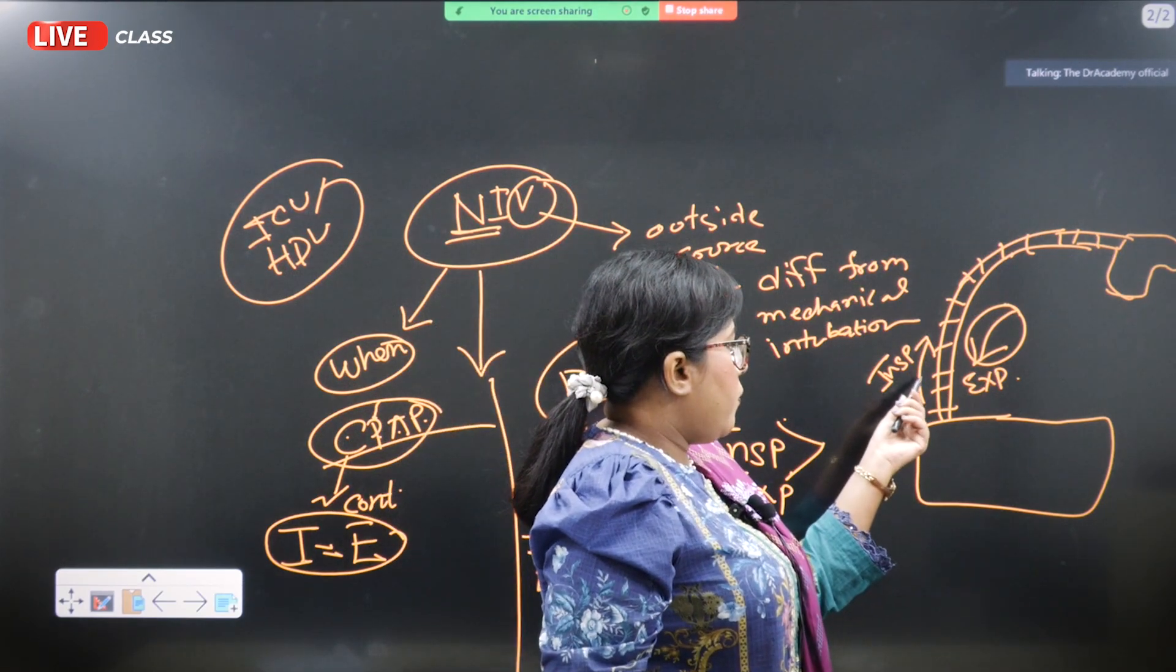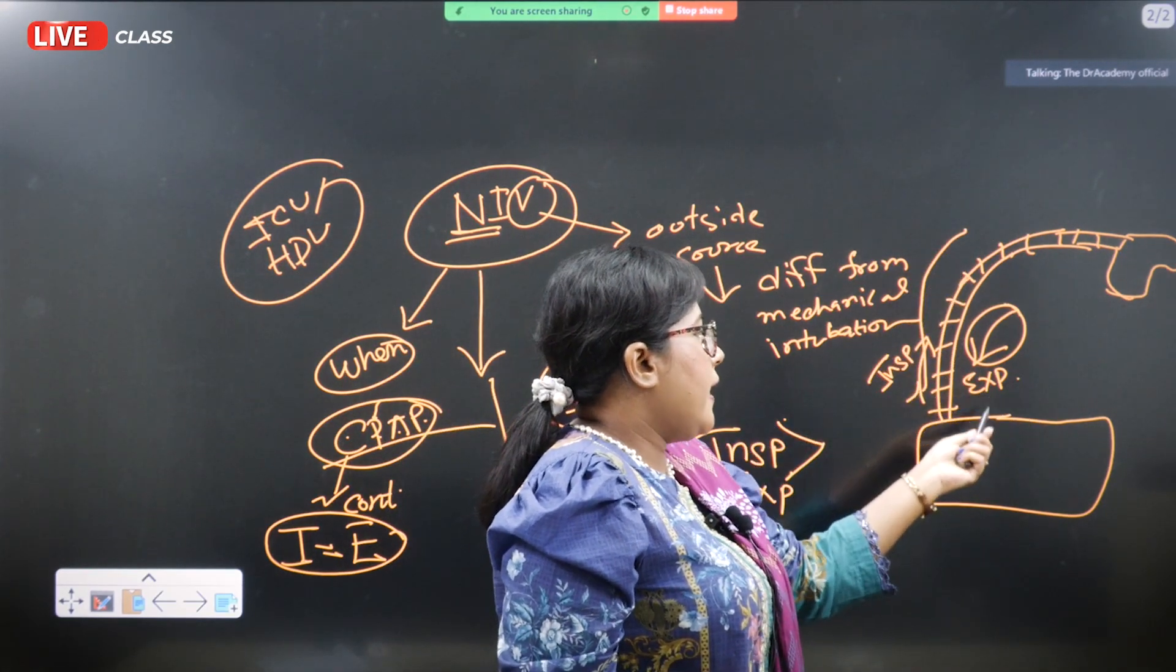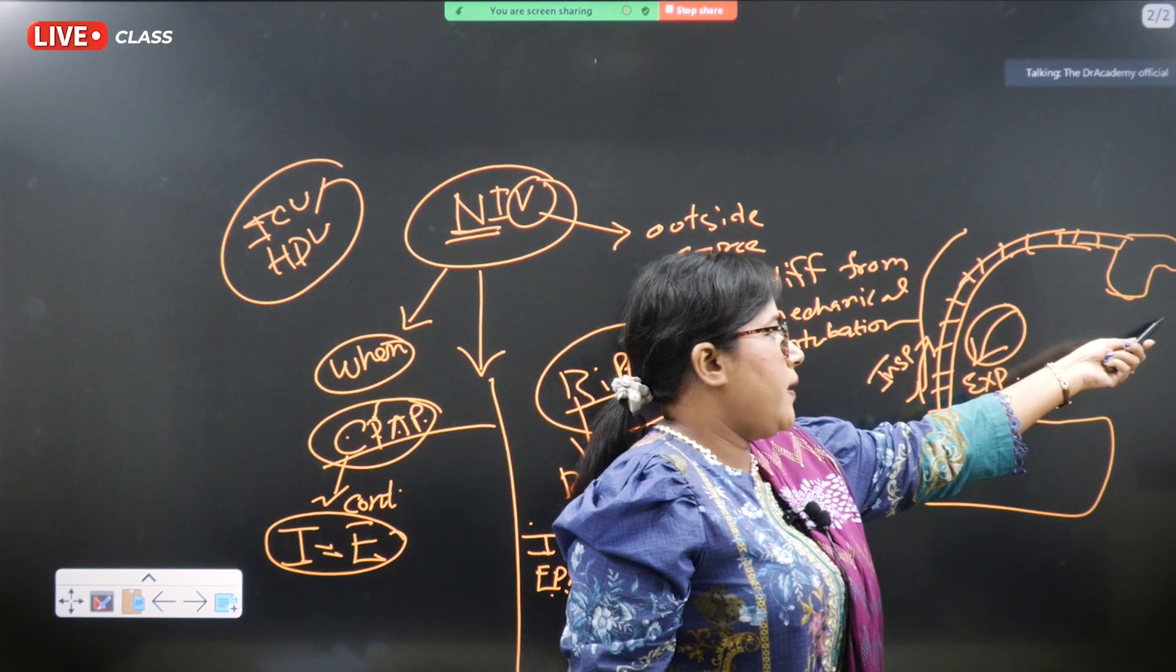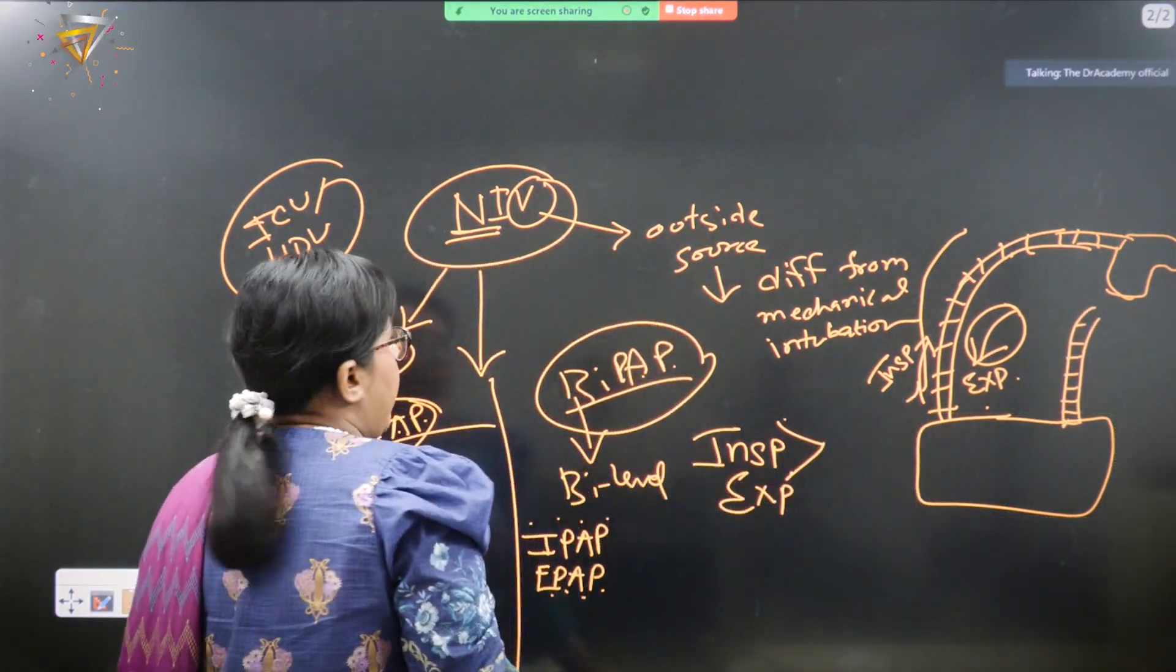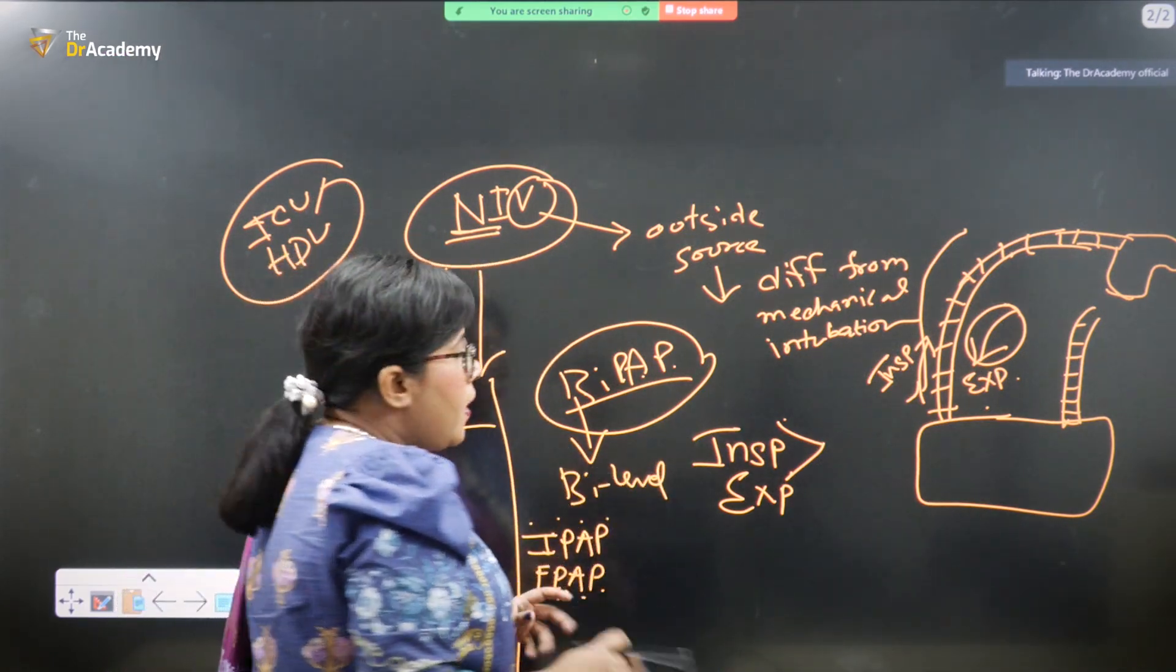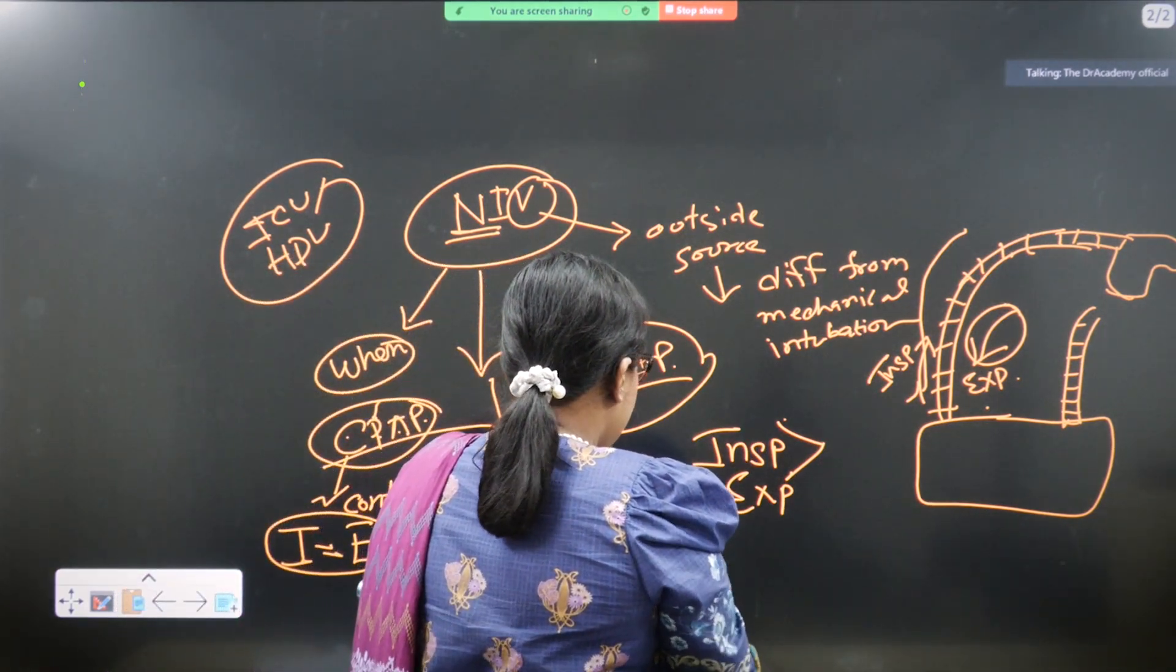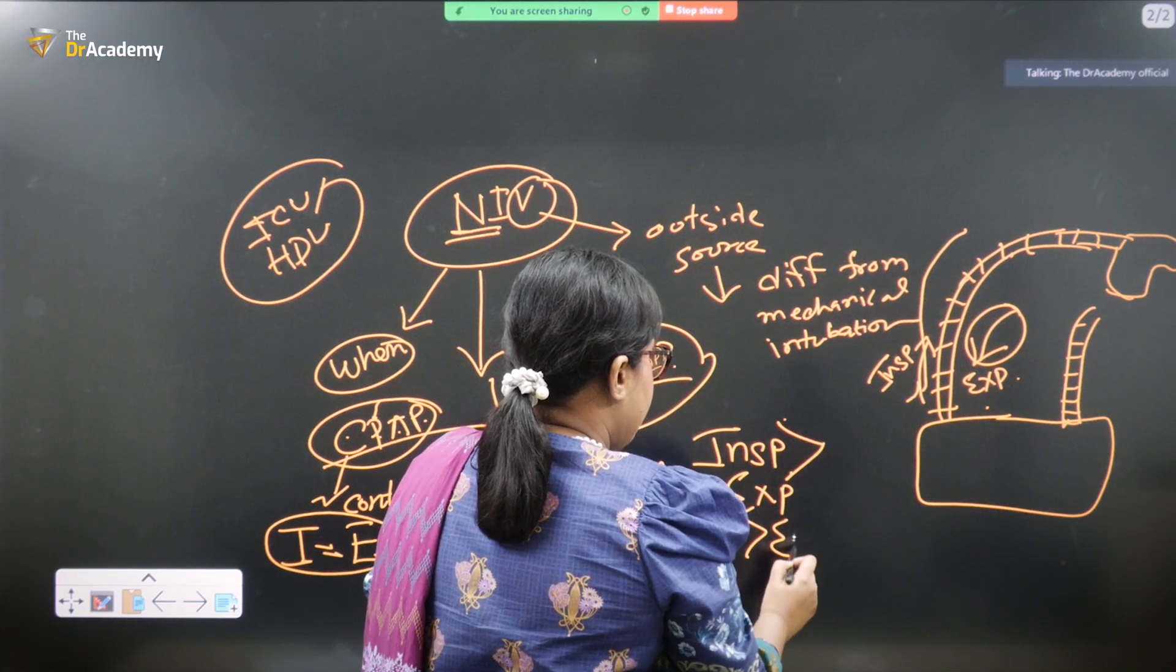The inspiratory positive airway pressure is maintained through the inspiratory circuit. In case of the CPAP, the IPAP and the EPAP level will be same, but in case of the bi-level, the IPAP will be more than the EPAP.